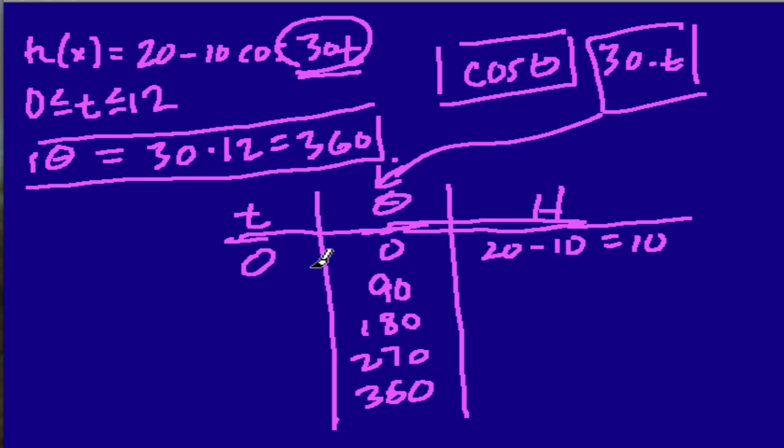And we're going to keep going like this. Now, what time do I plug in to get 90 for theta? Well, 30 times what is 90? 30 times 3. So 3 seconds is our next interval and 3 times 30 is 90 and the cosine of 90 is 0. So we have 20 minus 0 and the height is 20.